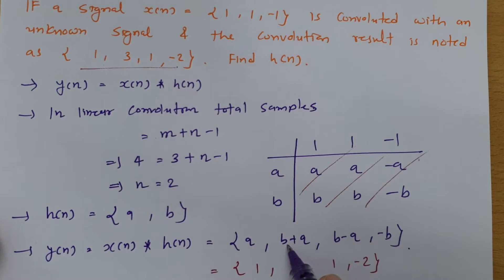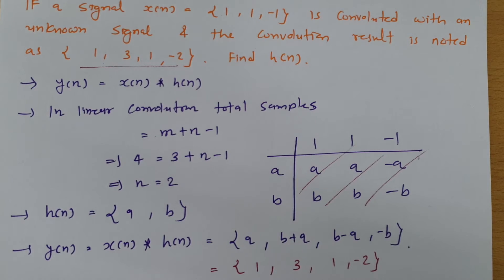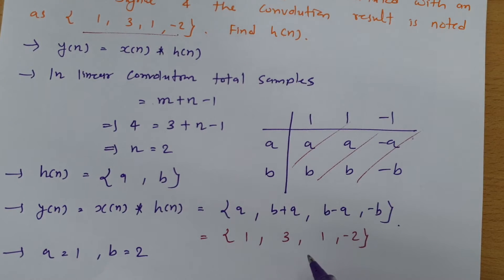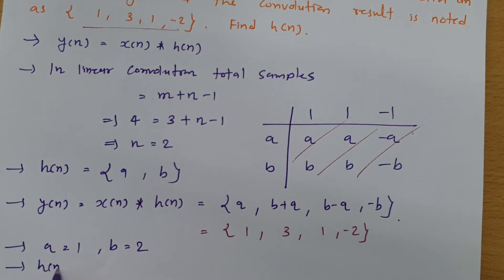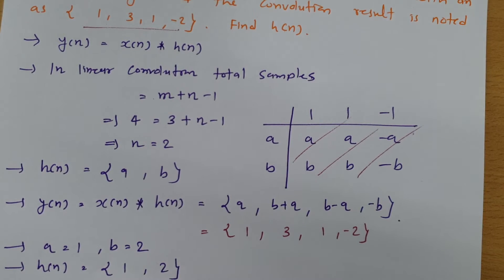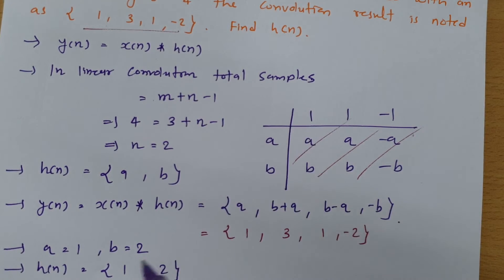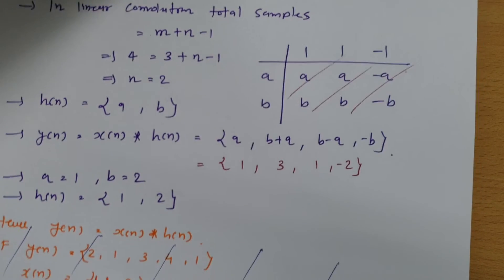Let us cross-verify: b plus a should be 3, and 1 plus 2 equals 3. b minus a should be 1, and 2 minus 1 equals 1 — cross-verification is confirmed. So h of n is {1, 2}. One thing to remember: if a and b satisfy some conditions but not others, one can say this is not a valid linear convolution result, and there is some error — you cannot identify the correct answer. Let us look at one more problem for a clearer idea.